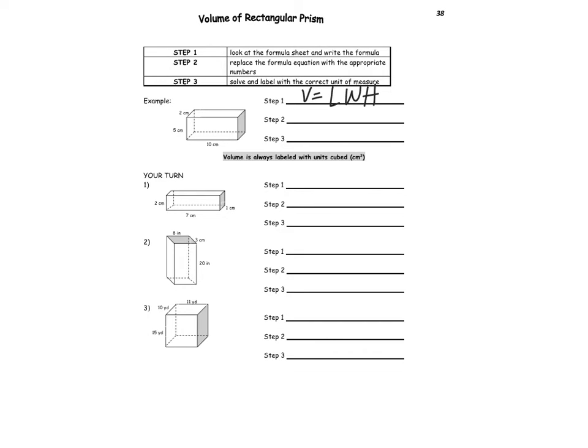First thing is write the formula. Then I always like to label what my length would be, that's the long side, the width, and the height. Then plug that into your formula. So it's length times width times height, 10 times 2 times 5, and that gives you 100. And with volume it'll be whatever the unit is, so in this example it's centimeters to the power of 3. Go ahead and try numbers 1, 2, and 3. Pause your screen and then check yourself with me.